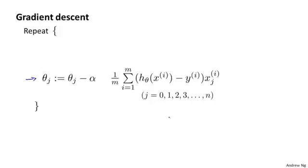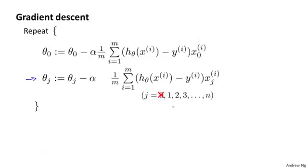Let me take this and just write the case for theta 0 separately. I'm just going to write the update for theta 0 separately, then the update for the parameters 1, 2, 3, and so on up to n. I haven't changed anything yet. This is just writing the update for theta 0 separately from the updates for theta 1, theta 2, theta 3, up to theta n.